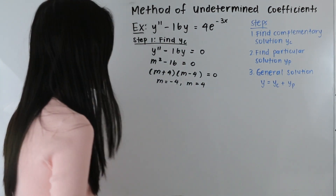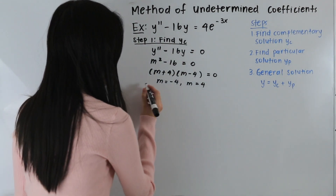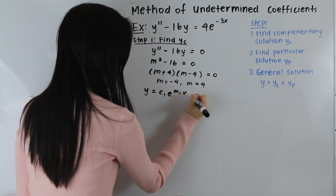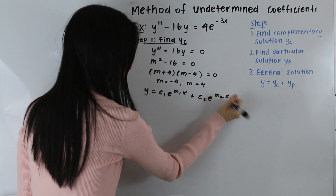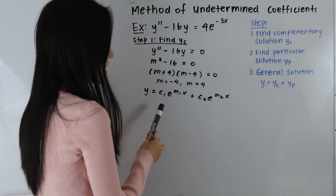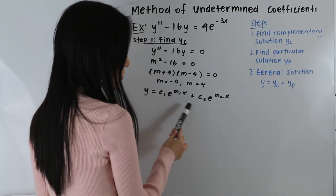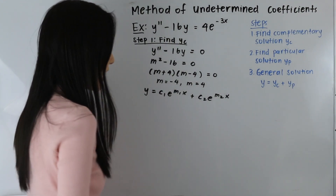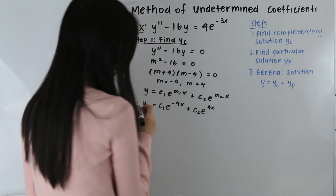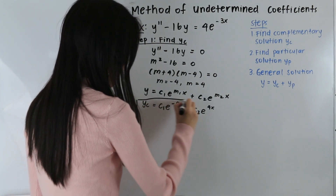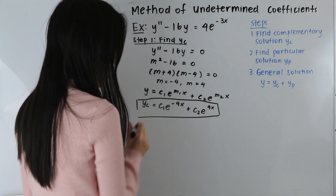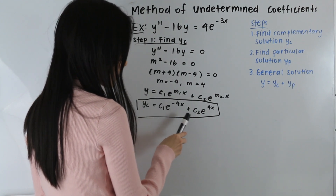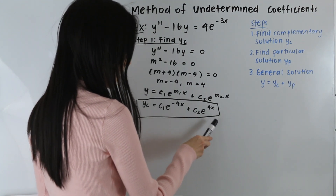We have a case one situation, so our general solution is going to be of the following form: y is equal to c1e to the m1x plus c2e to the m2x. Plugging in our m values, our complementary solution is yc is equal to c1e to the negative 4x plus c2e to the 4x.